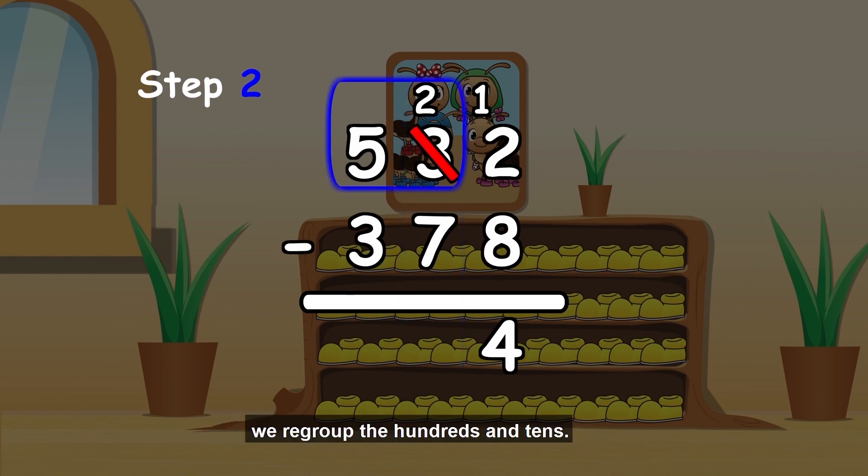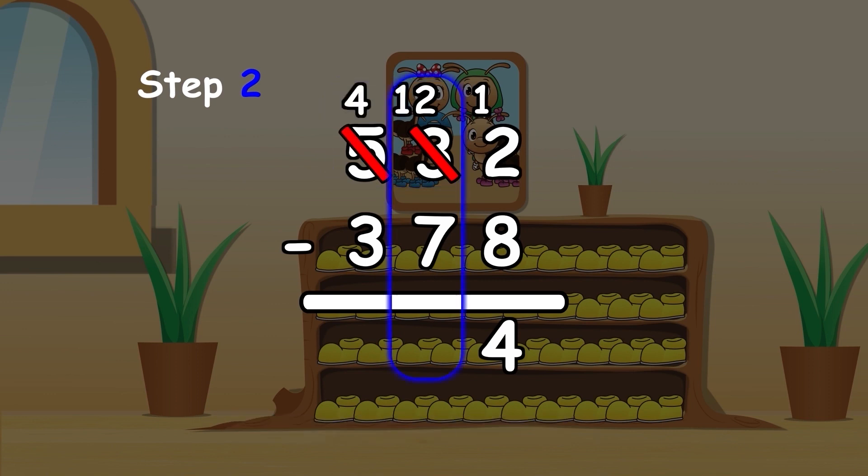5 hundreds, 2 tens equals 4 hundreds, 12 tens. 12 minus 7 equals 5.